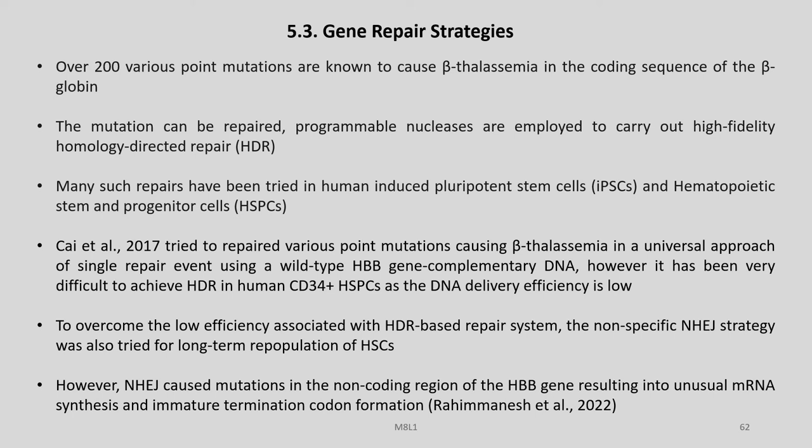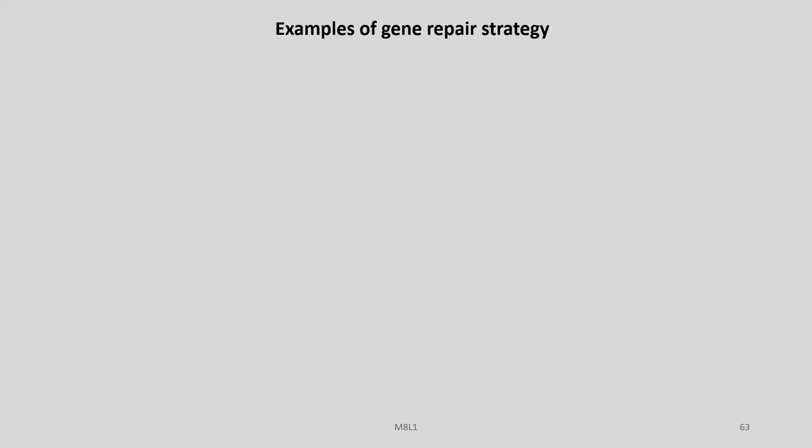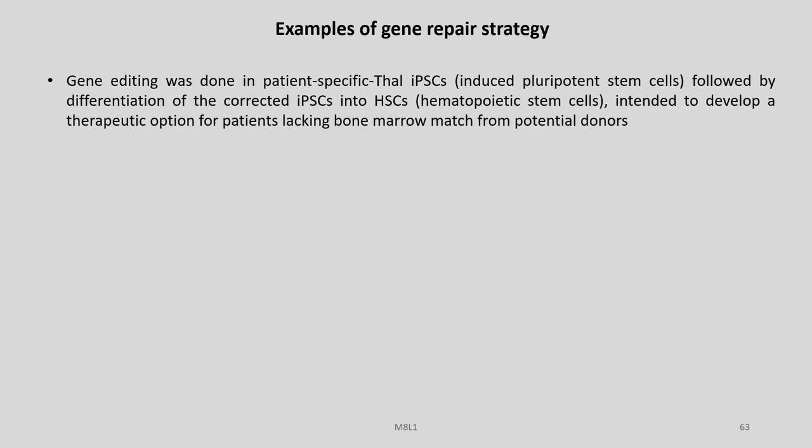To overcome the low efficiency associated with HDR-based repair systems, the non-specific NHEJ strategy was also tried for long-term repopulation of HSCs. However, NHEJ caused mutations in the non-coding regions of the HBB gene, resulting in unusual mRNA synthesis and premature termination codon formation. Let us discuss some examples of gene repair strategy.